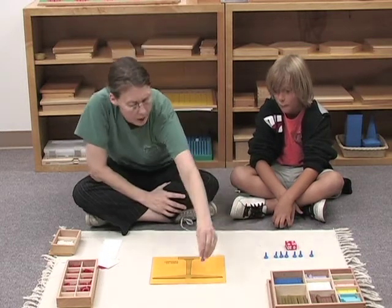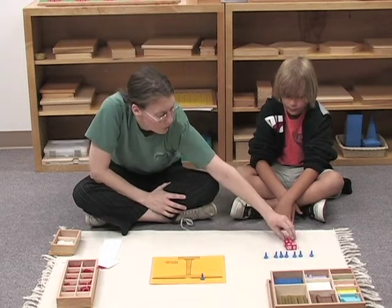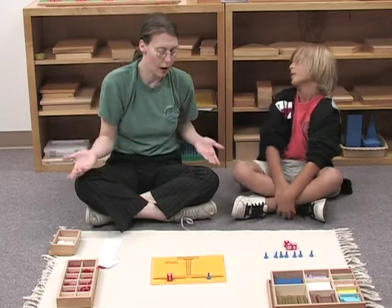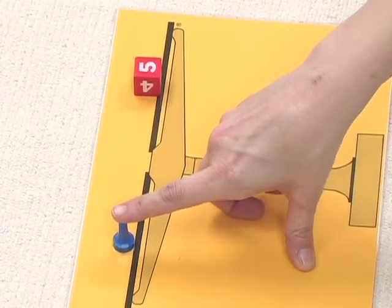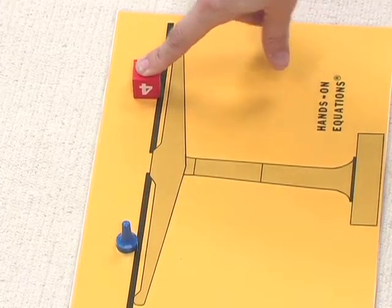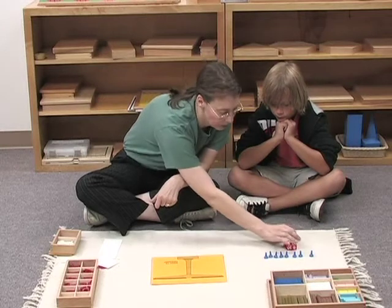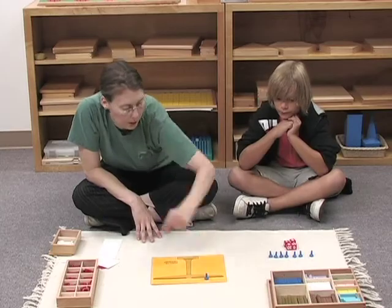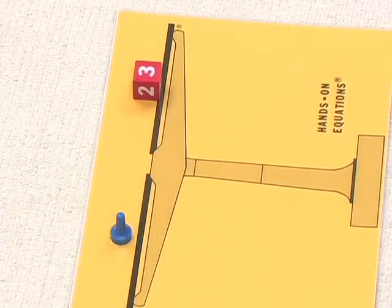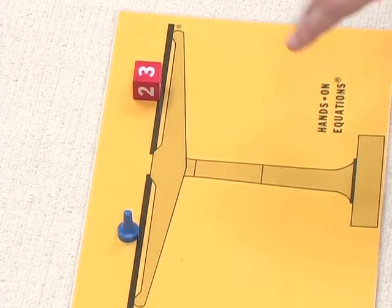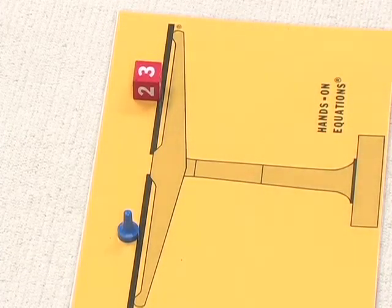And if I place a blue pawn here and I place a five here, then obviously this tells me that this blue pawn equals five. Right? Okay. So let's clear the board. Let's say I take this blue pawn. Let's say we have a three on the other side. Now we see that this blue pawn is three, isn't it?